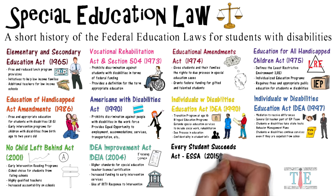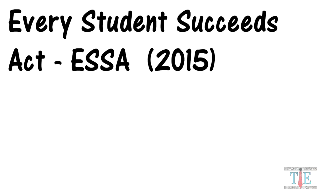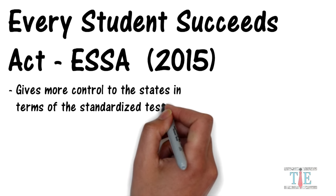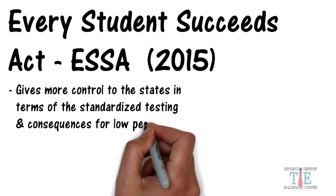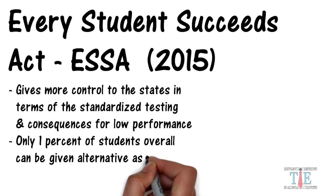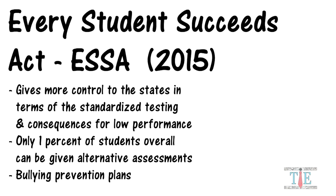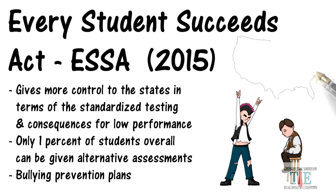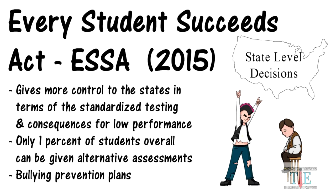Moving on to some of the most recent laws: the Every Student Succeeds Act of 2015. It gives more control to the states in terms of standardized testing and consequences for low performance. Only 1% of students overall can be given alternative assessments. There are also bullying prevention plans, as studies show students with disabilities are often targets of bullying. Schools are responsible for setting up plans to prevent bullying and protect special education students. The act looks to decrease the amount of high-stakes testing by allowing states to make decisions.